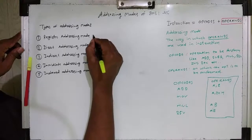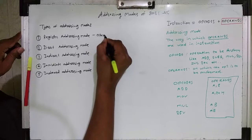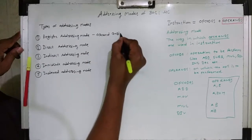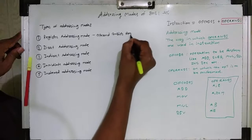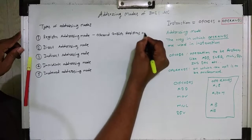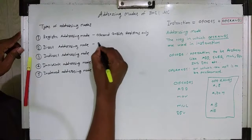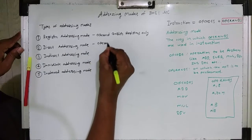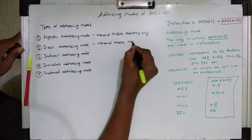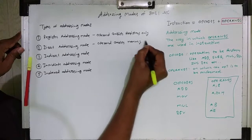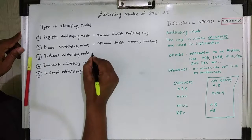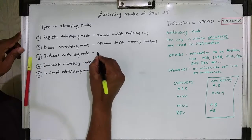Now, what is meant by register addressing mode? In register addressing mode, the operand consists of only registers. Registers include the accumulator, register B, data pointer, program counter, and register bank registers R0 to R7.